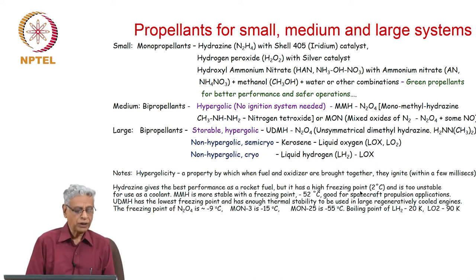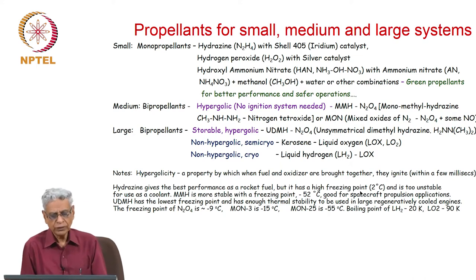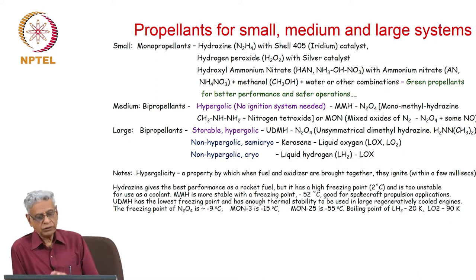Medium systems depend on bipropellants which are hypergolic. When the two fluids are brought together, there is a liquid phase reaction which is exothermic and leads to a flame, therefore no ignition system is needed. Many options are used: monomethyl hydrazine and nitrogen tetroxide N2O4, or MON which is mixed oxides of nitrogen, essentially nitrogen tetroxide and some nitric oxide. Depending on the amount of nitric oxide, you have MON 3, MON 25 and so forth.